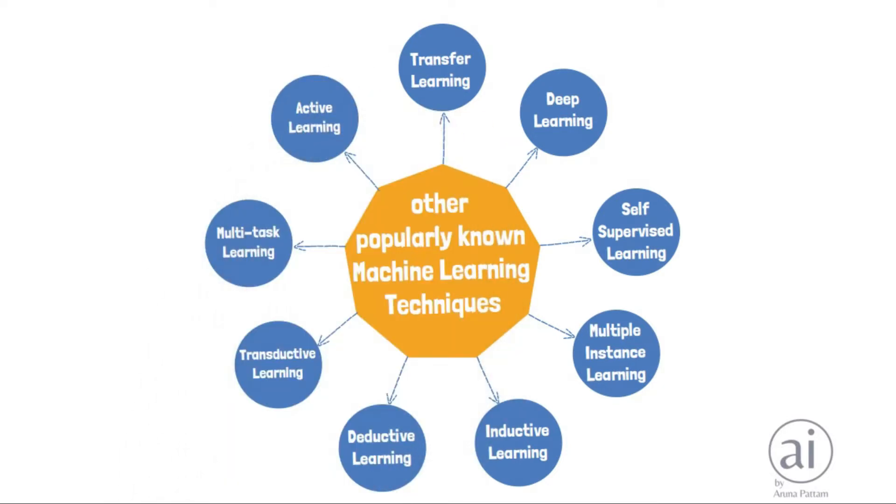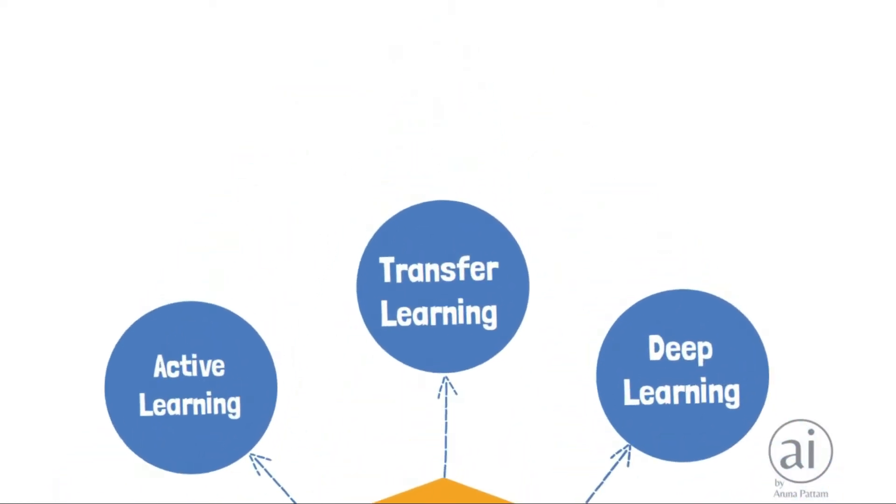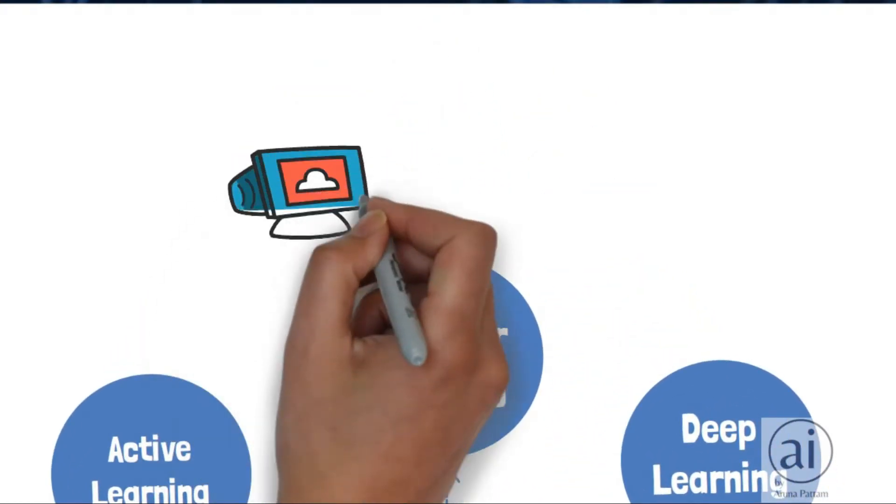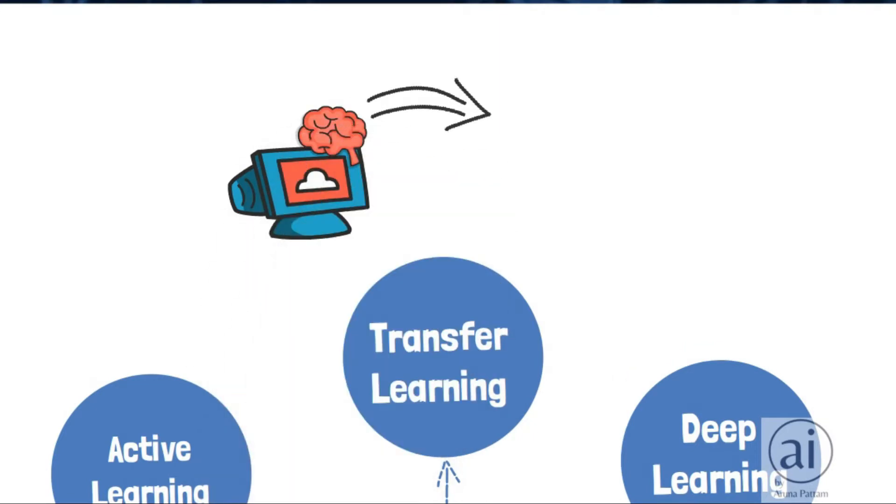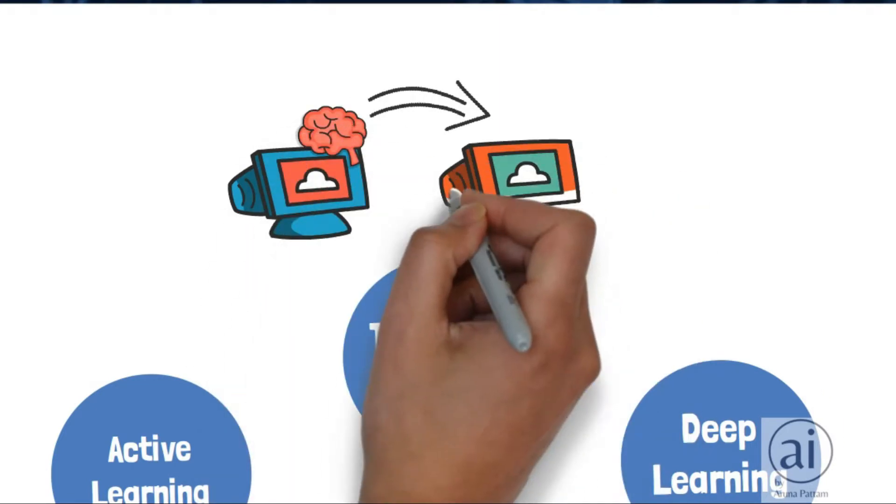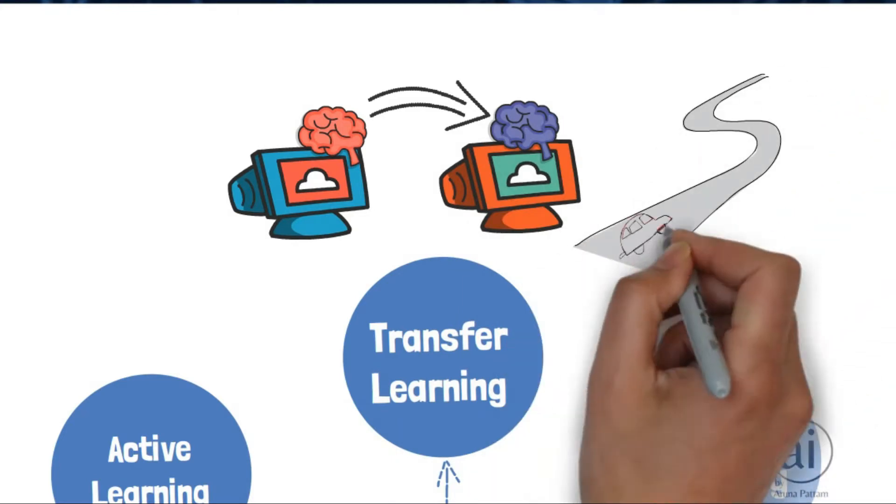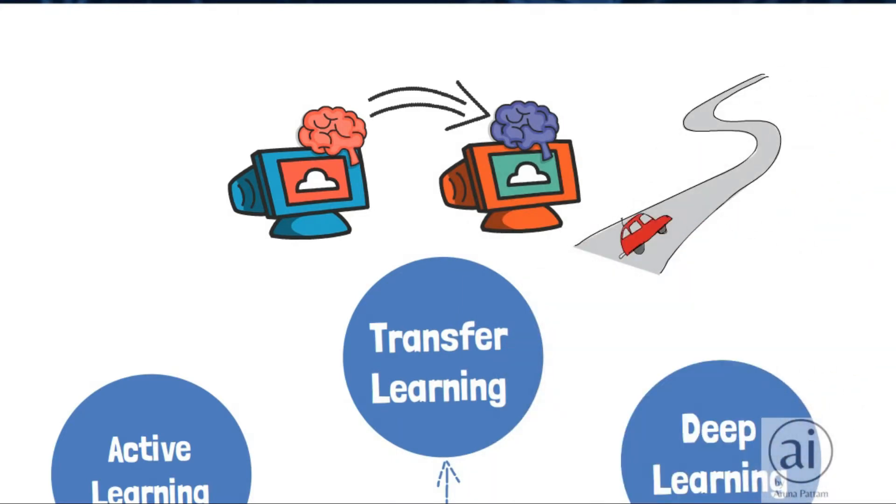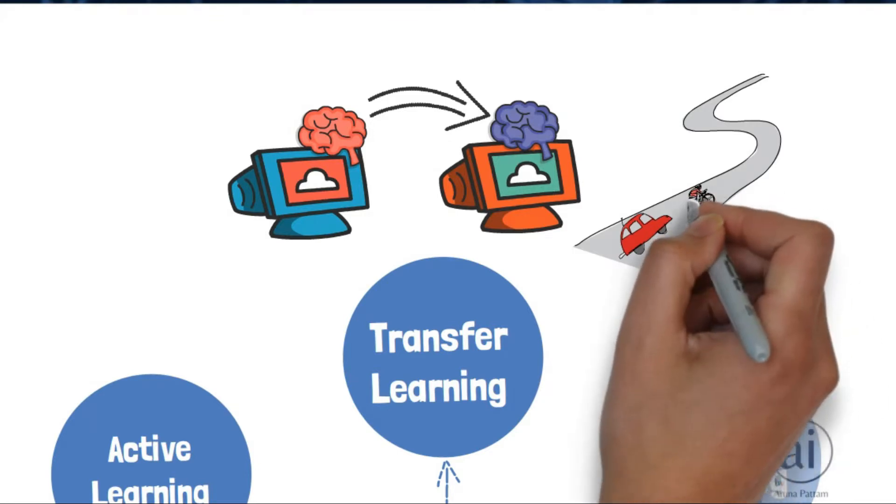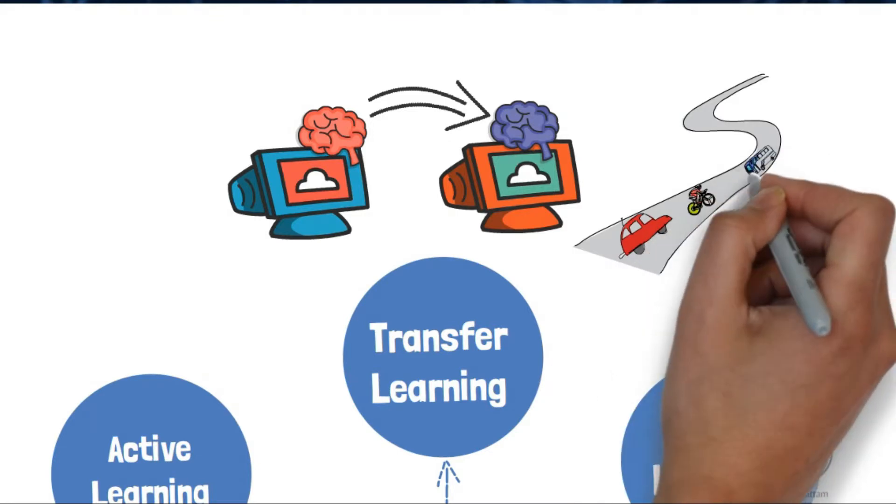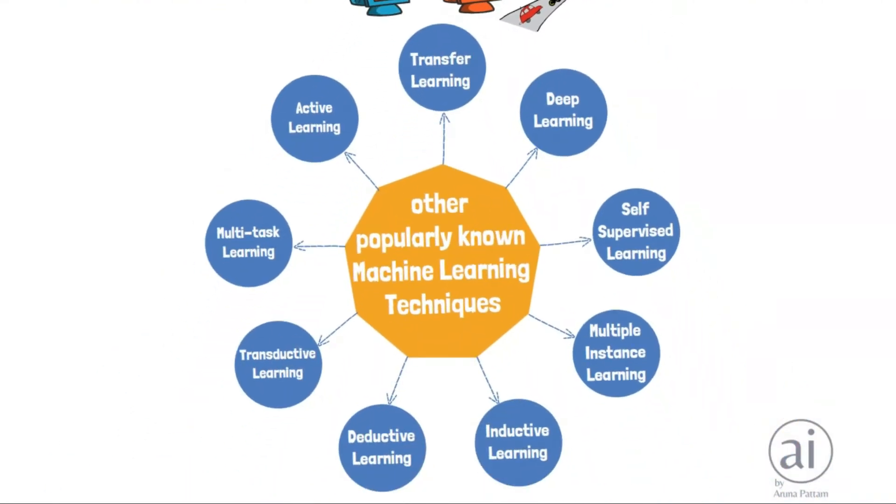Transfer learning is a machine's ability to reuse knowledge learned from one task and apply it to another. For example, a model for detecting other cars on the road can be used for detecting motorcycles or buses during autonomous driving.